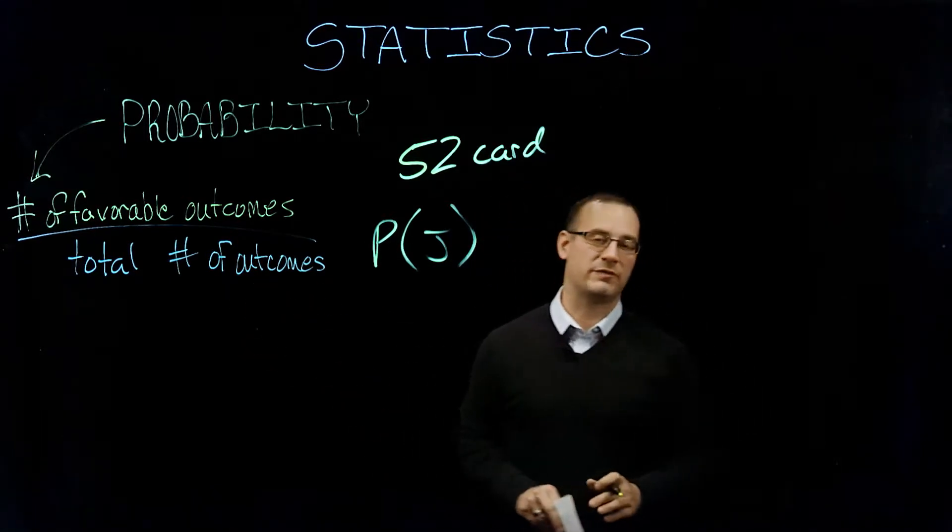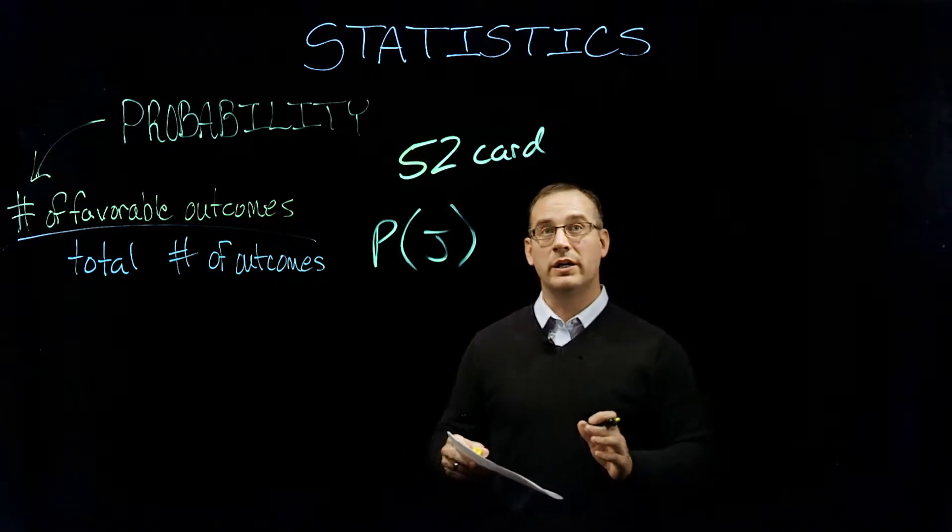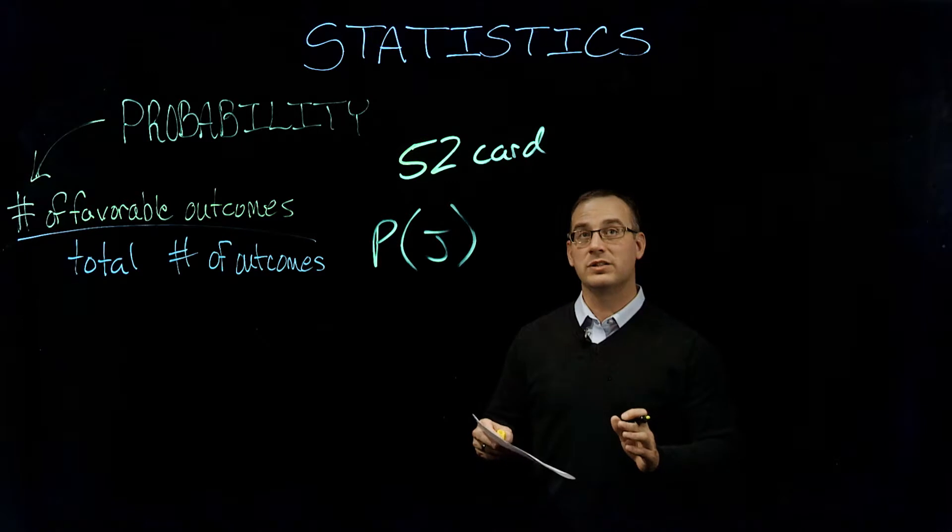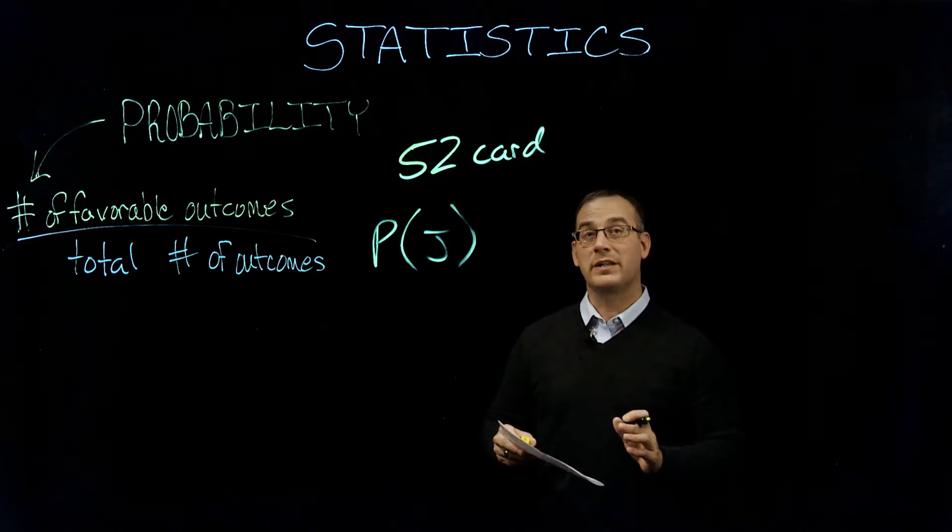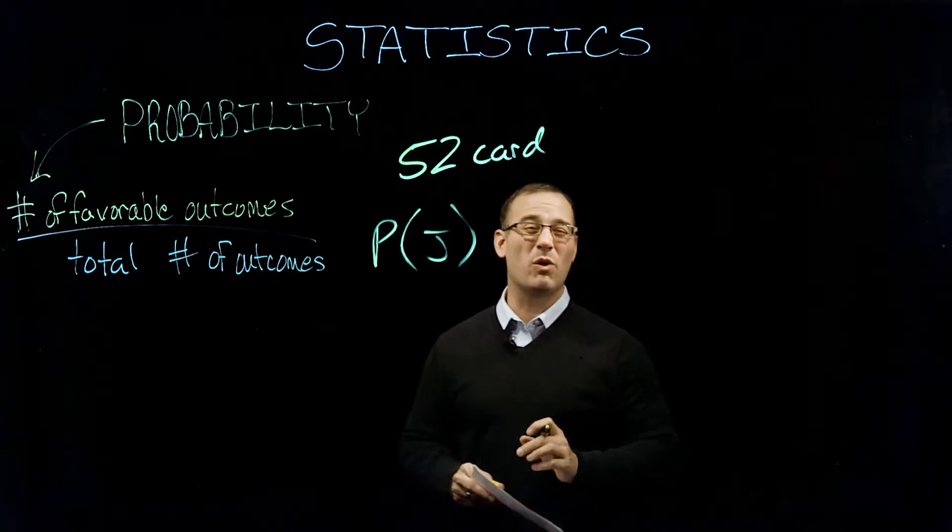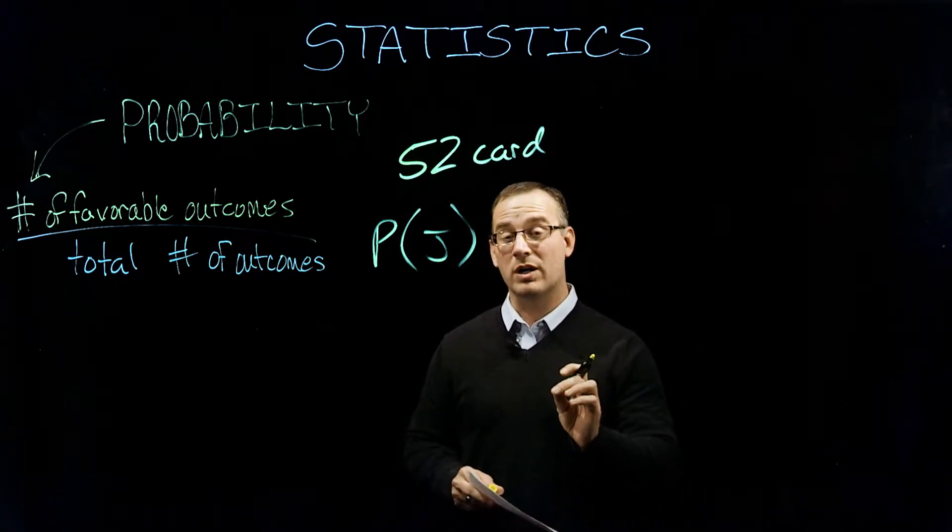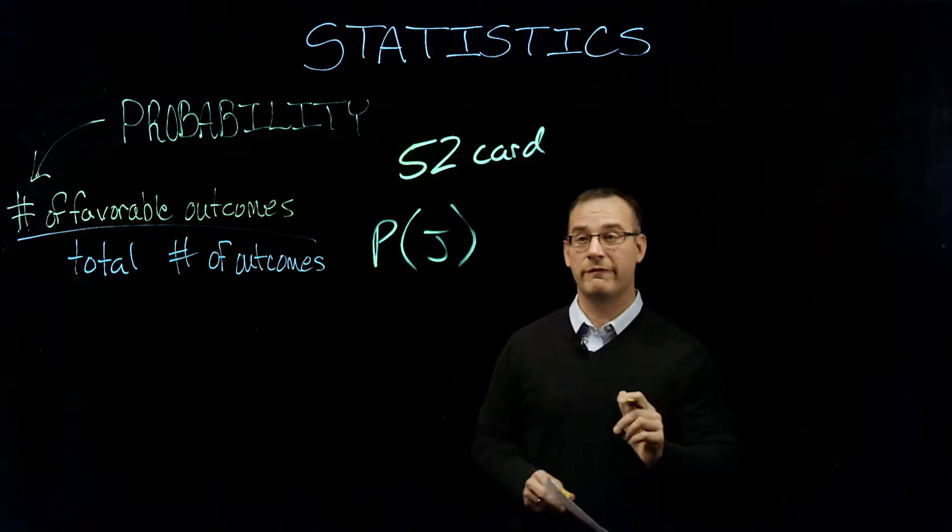Even if you didn't know this formula, you would say, well, there are, you know, there are 13 suits—okay, but there are only four, sorry, 13 ranks, but there are four jacks. So that makes sense. There's going to be four chances out of 52.